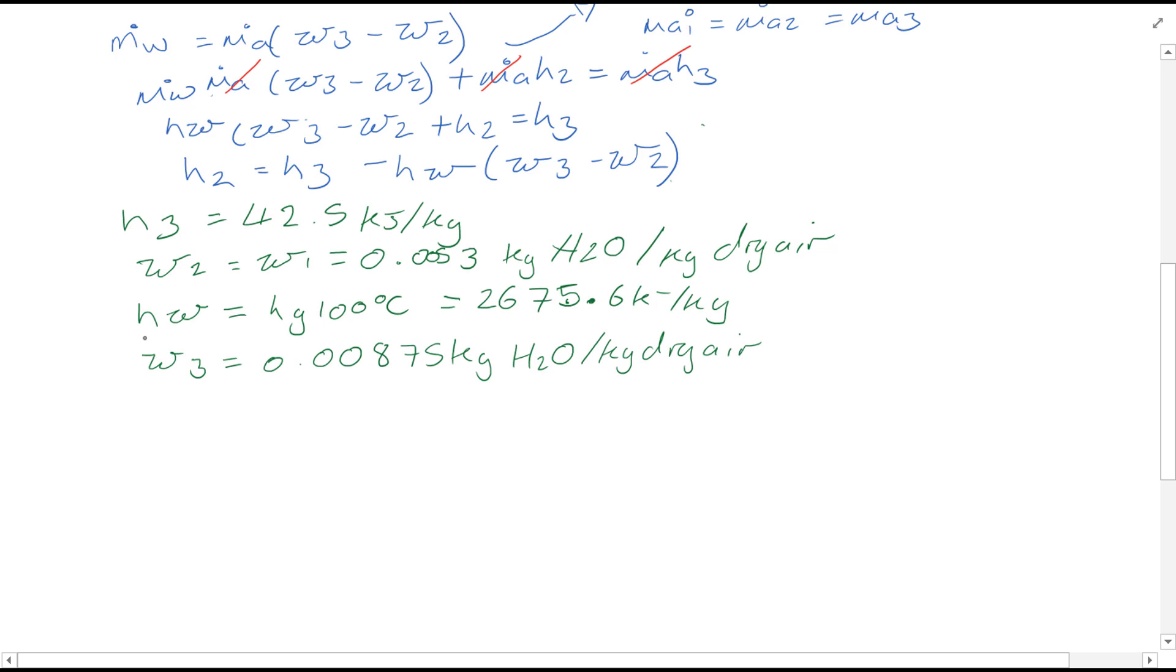We also know omega 3 from the chart which is 0.00875 kg H2O per kg dry air. Hence now subbing these values into the above equations.